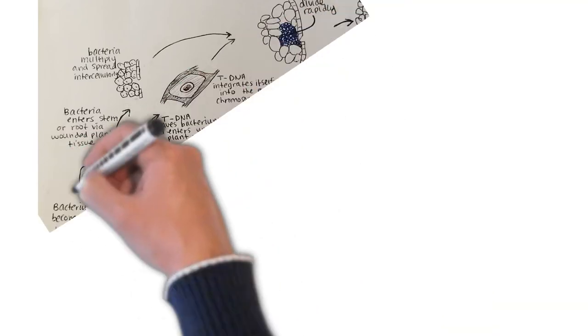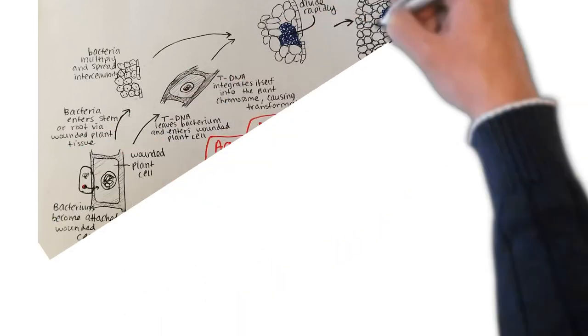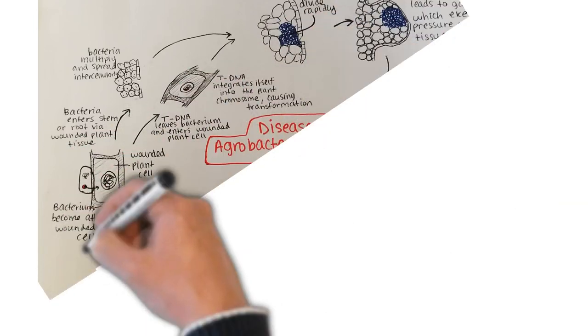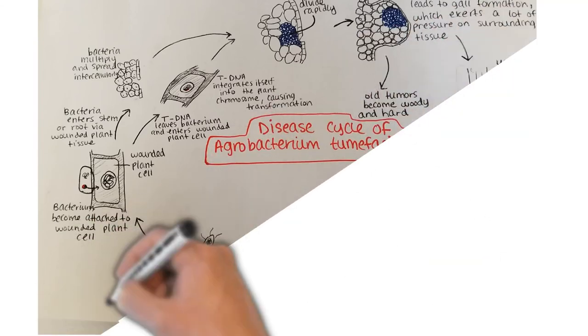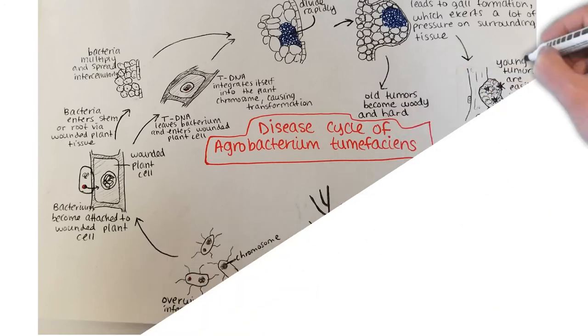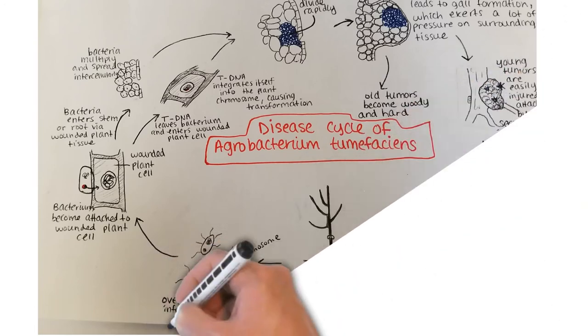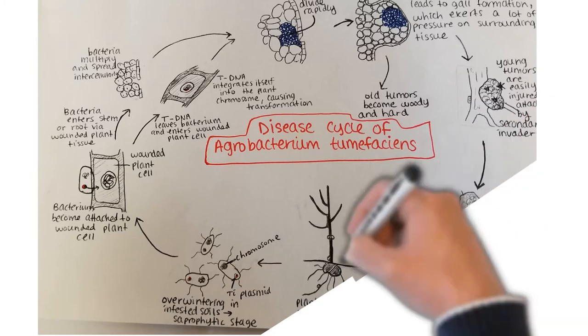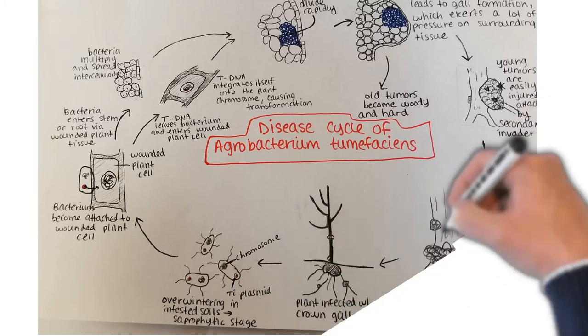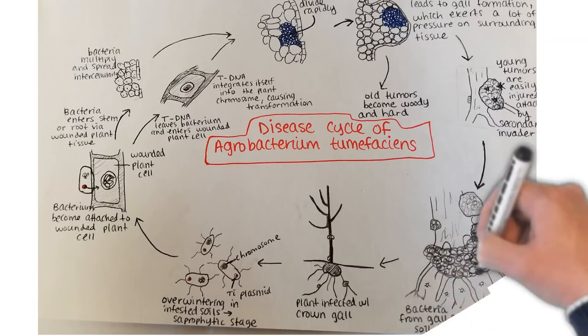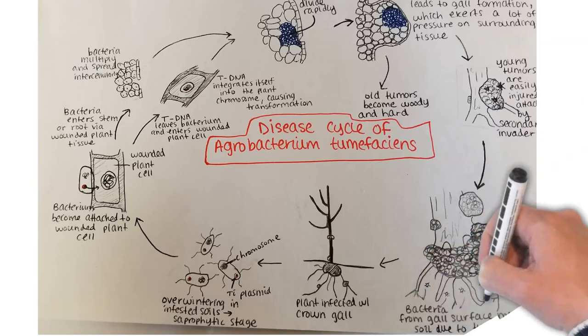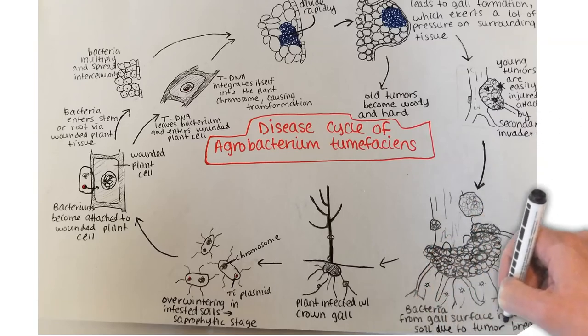The bacterial DNA combines with the DNA of the plant host cell where it transforms the cell, causing it to become tumor forming or gall forming and also to produce specific new materials on which the bacteria feed. As the gall grows, the plant tissues become disorganized and normal transport processes are disrupted. This causes the formation of galls or crown galls.